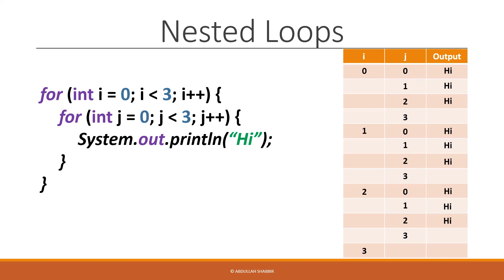If you noticed, i changed from zero to three, and every time i had a value, j also changed from zero to three. This is the core idea behind nested loops — you can use i and j interchangeably inside the inner loop in many occasions.